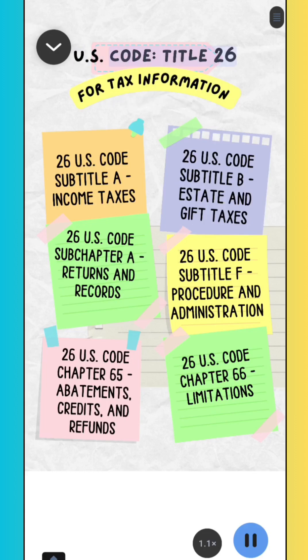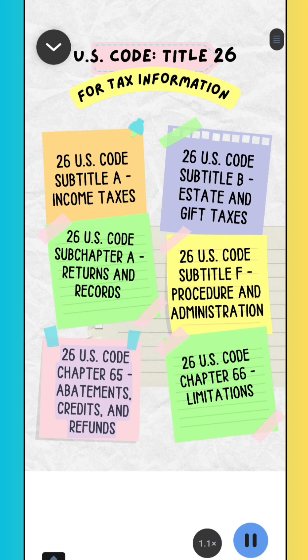For tax information: U.S. Code, Title 26. 26 U.S. Code Subtitle F, Procedure and Administration. 26 U.S. Code Chapter 66, Limitations. 26 U.S. Code Chapter 65, Abatements, Credits, and Refunds.